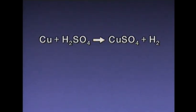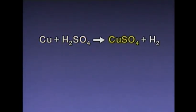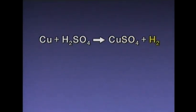In this example, the left side of the equation has one copper atom, two hydrogen atoms, one sulfur atom, and four oxygen atoms. When copper and sulfuric acid react together, the products are copper sulfate and hydrogen. If the equation is balanced, we should have the same number of each type of atom on the right side as on the left side. There is one copper, one sulfur, four oxygens, and two hydrogens. The numbers are equal, so the equation is balanced.